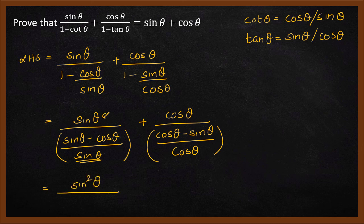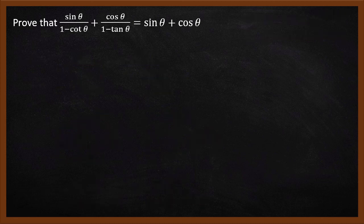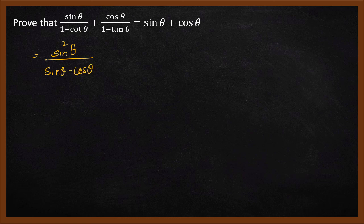So that will be sine squared theta divided by sine theta minus cos theta, plus — similarly — cos squared theta divided by cos theta minus sine theta. Rewriting on a new board: sine squared theta divided by sine theta minus cos theta, plus cos squared theta divided by cos theta minus sine theta.